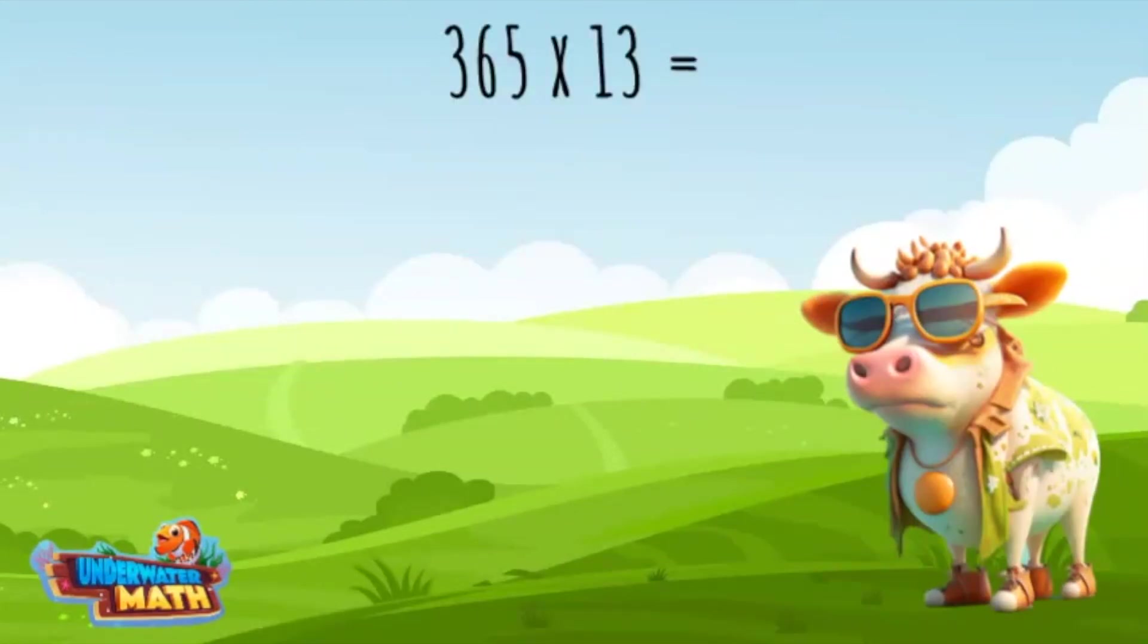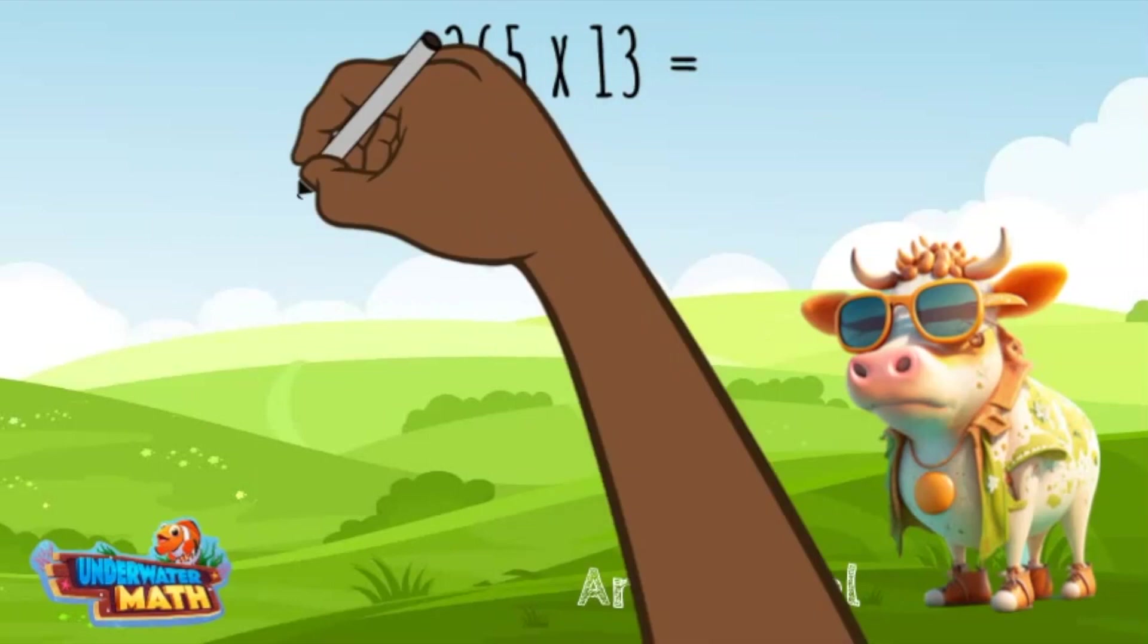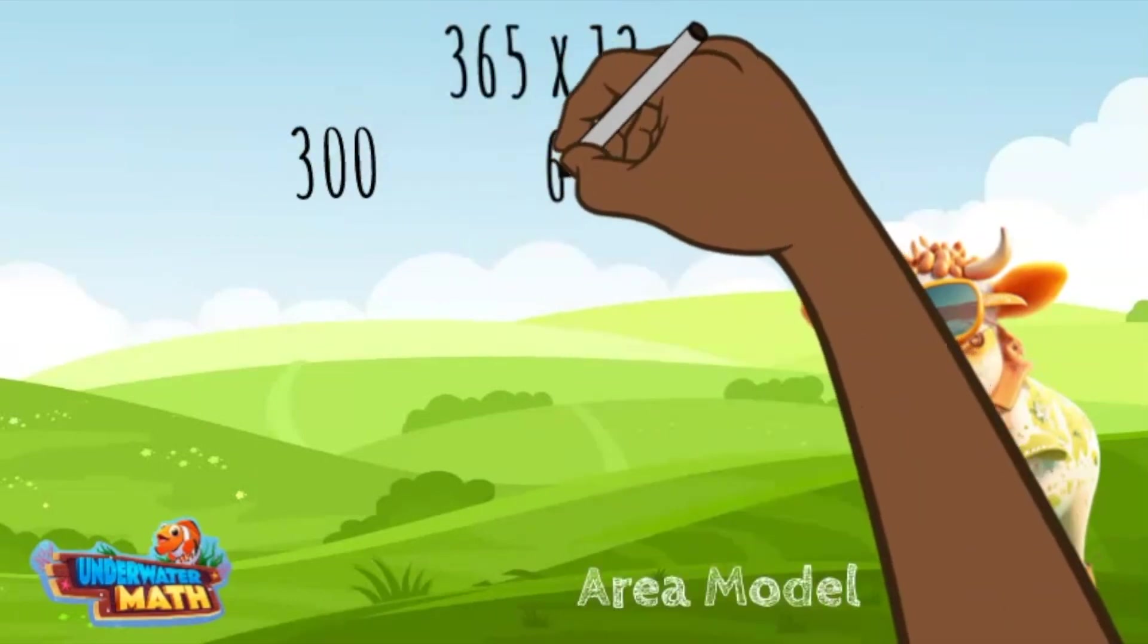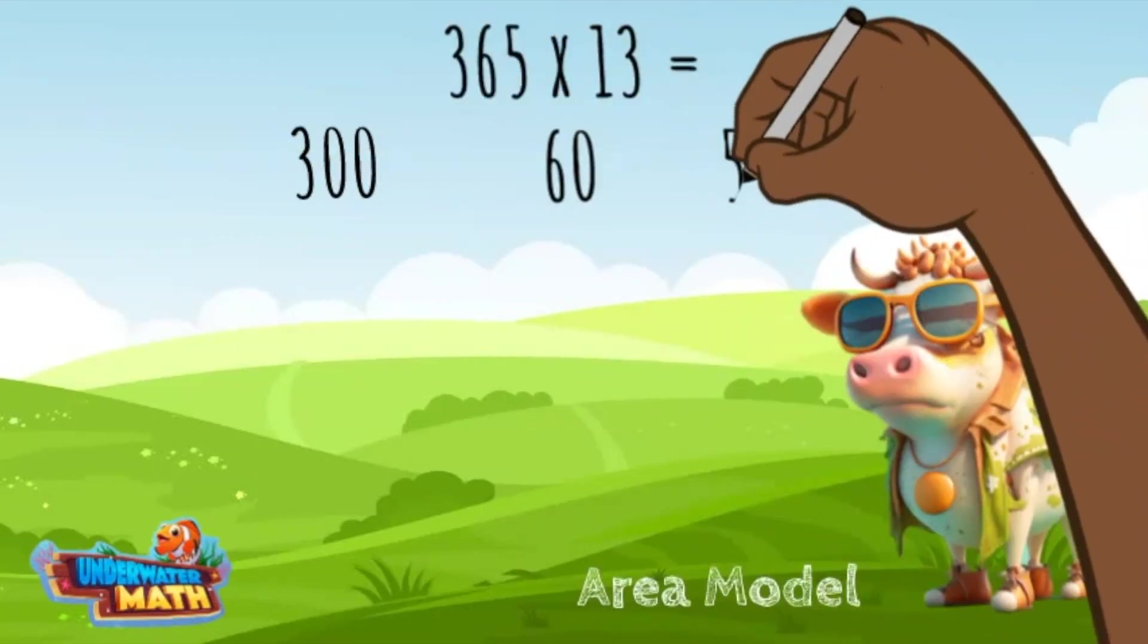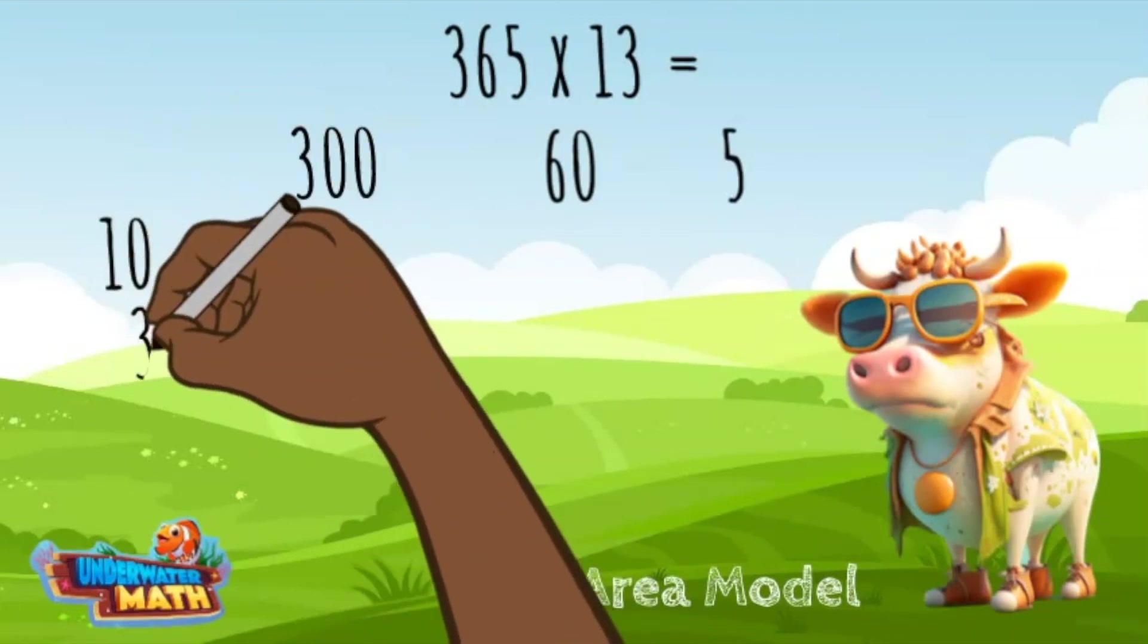The next strategy is called the area model. I start by breaking down each digit in the factors to their individual value. 360 and 5 go across the top, 10 and 3 go from the top to bottom. I make a grid that is three columns and two rows.